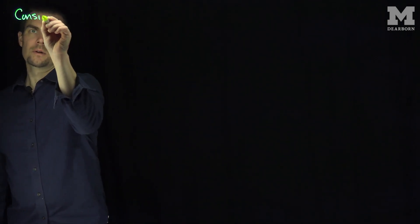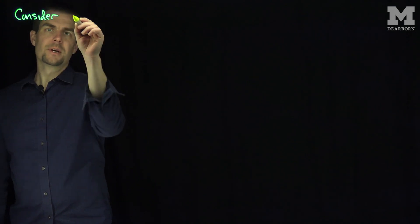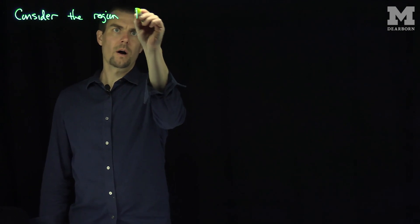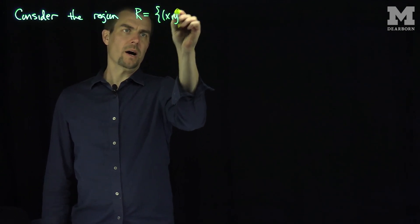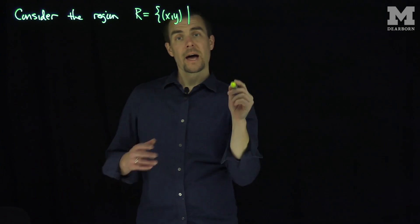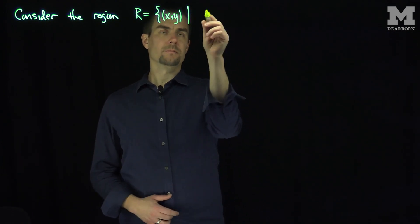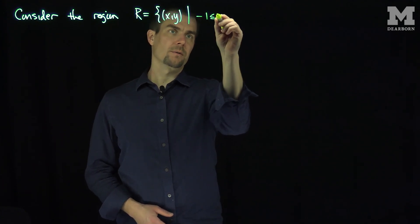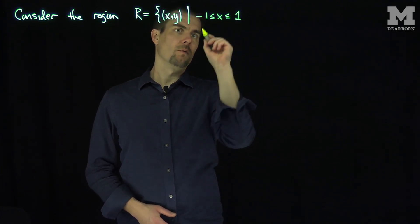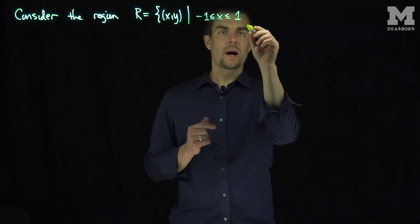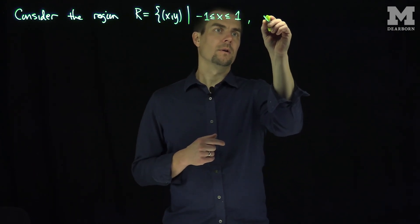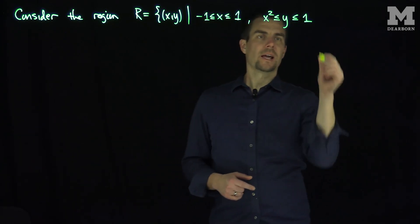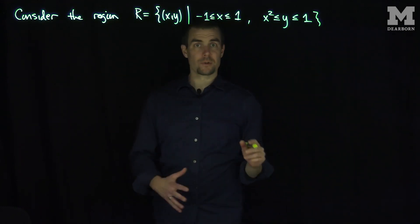Let's consider several examples. Consider the region R, which is the set of points x and y, such that x is between negative 1 and 1, y is between 0 and 1. More specifically, negative 1 less than or equal to x less than or equal to 1, and y is bigger than x squared and less than 1. Let's figure out what this region looks like.